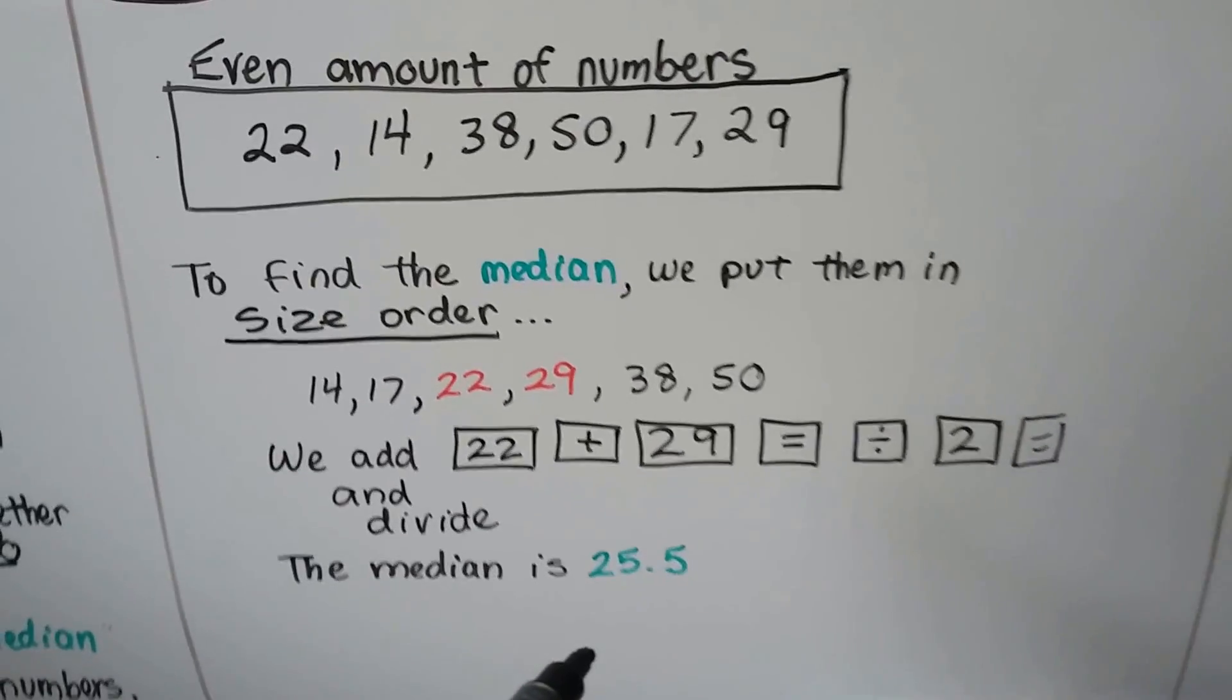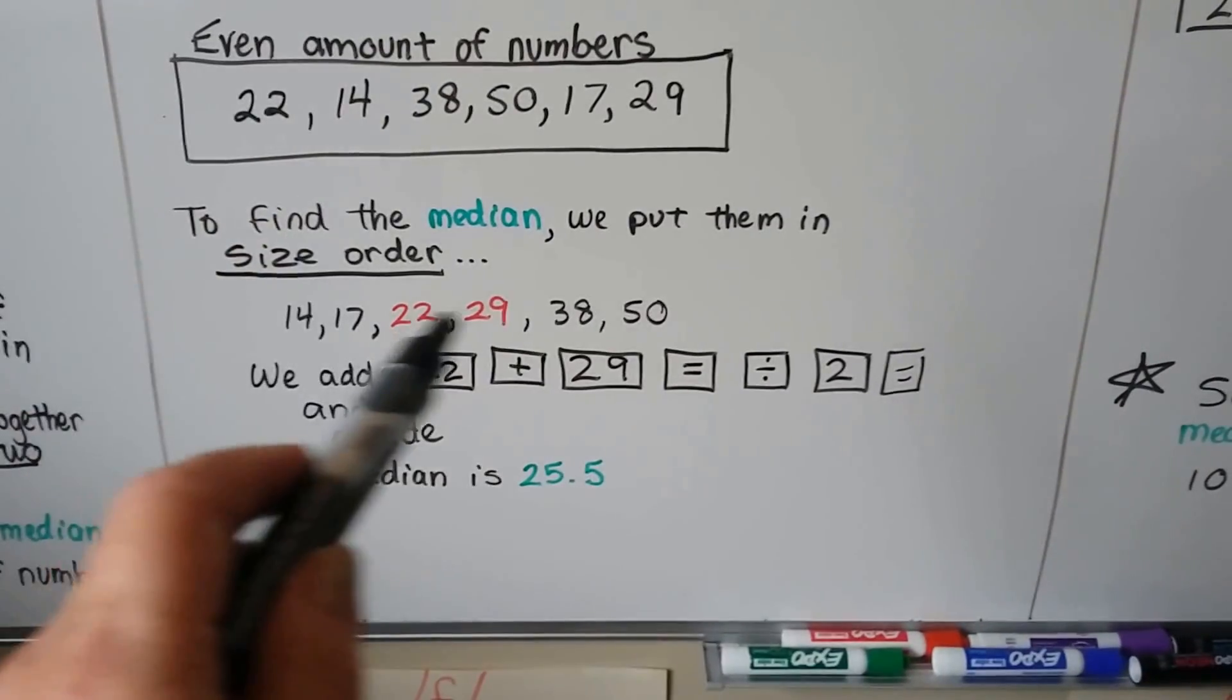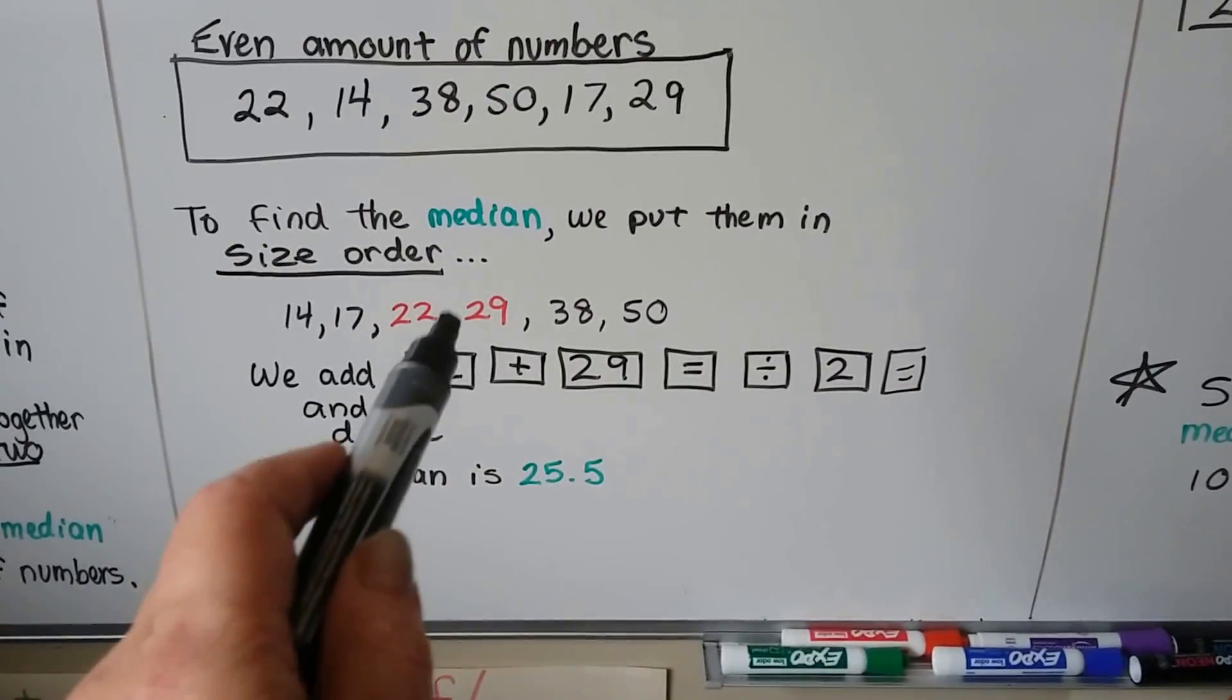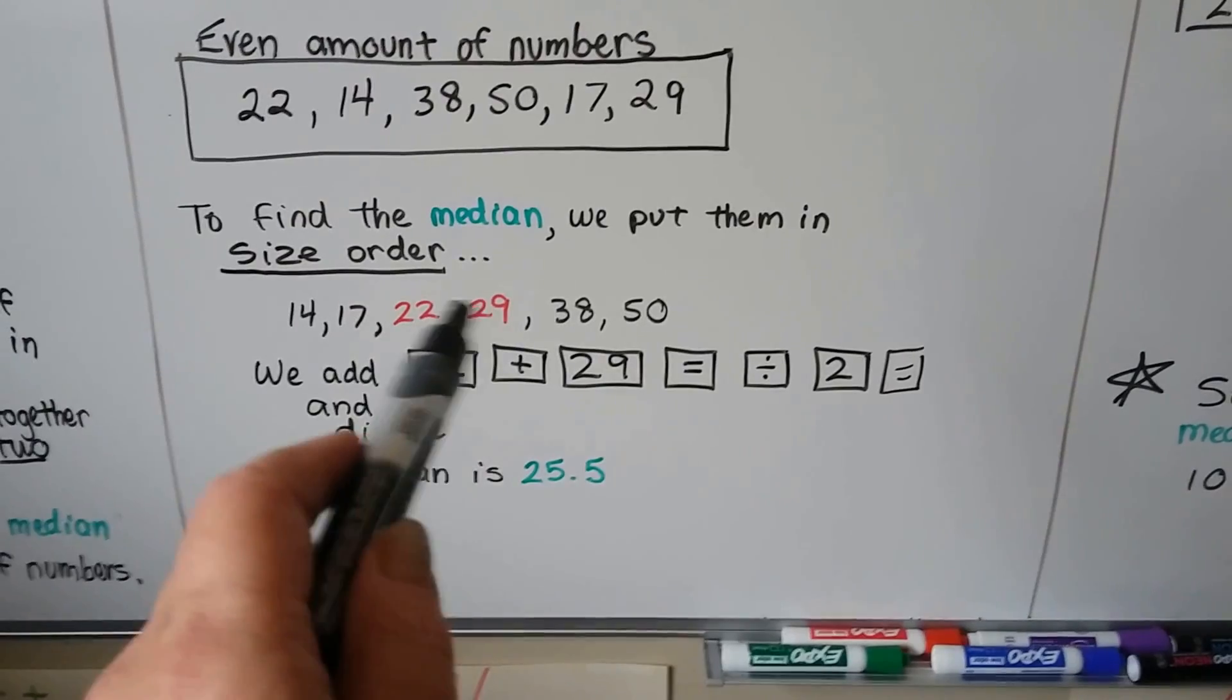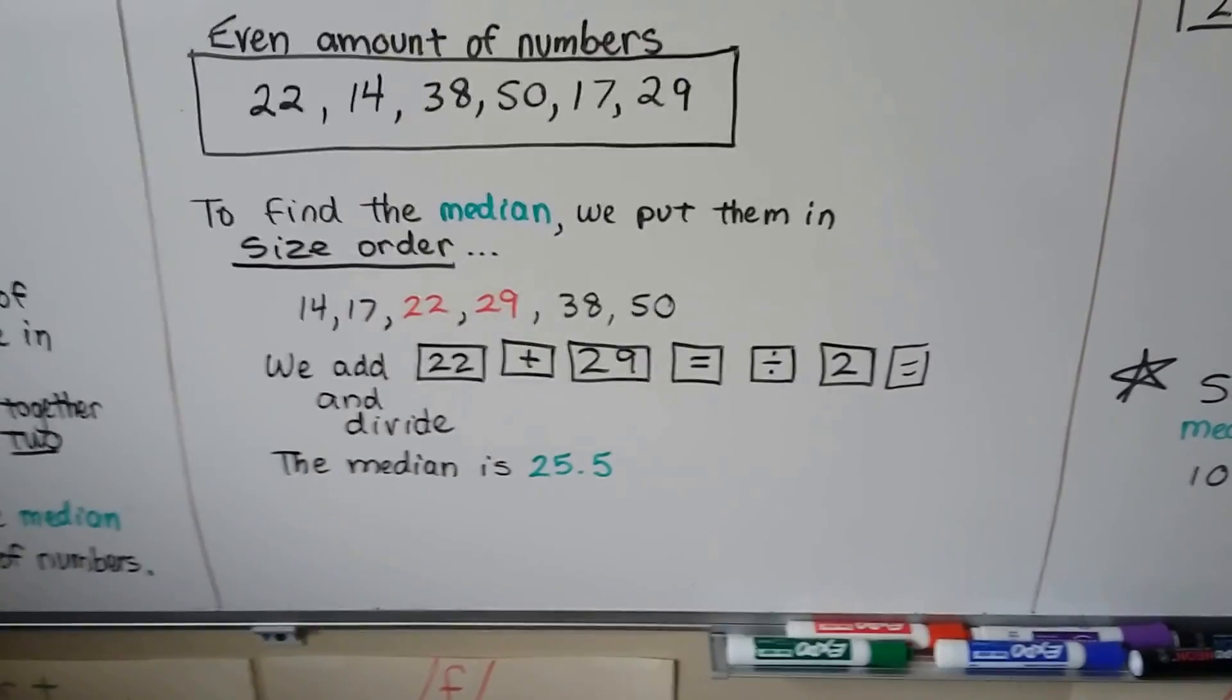So that's different. Because there was no middle number, there were two of them. So we just found the average of those two numbers by adding them and then dividing by that 2, because that's the two numbers we added.